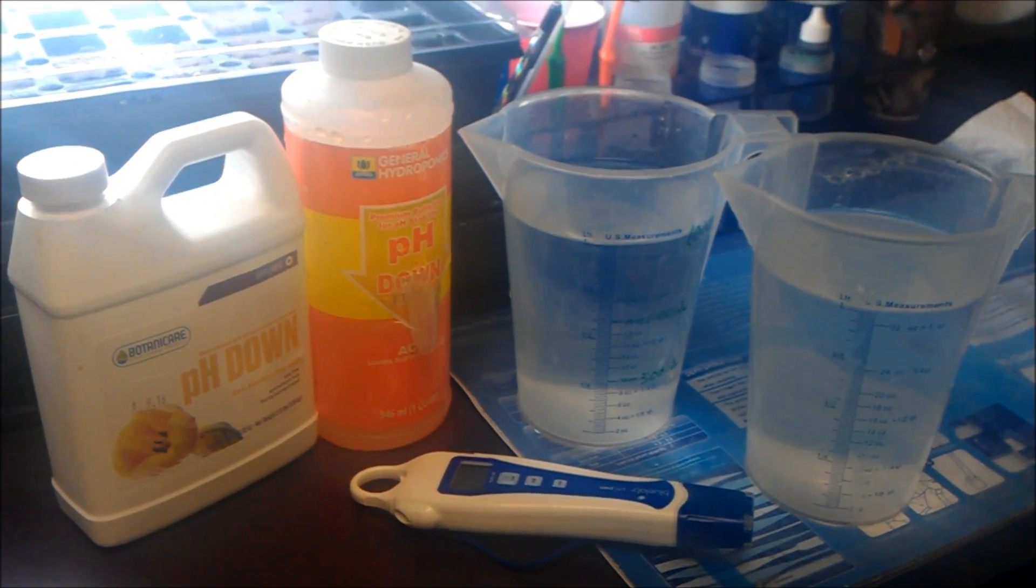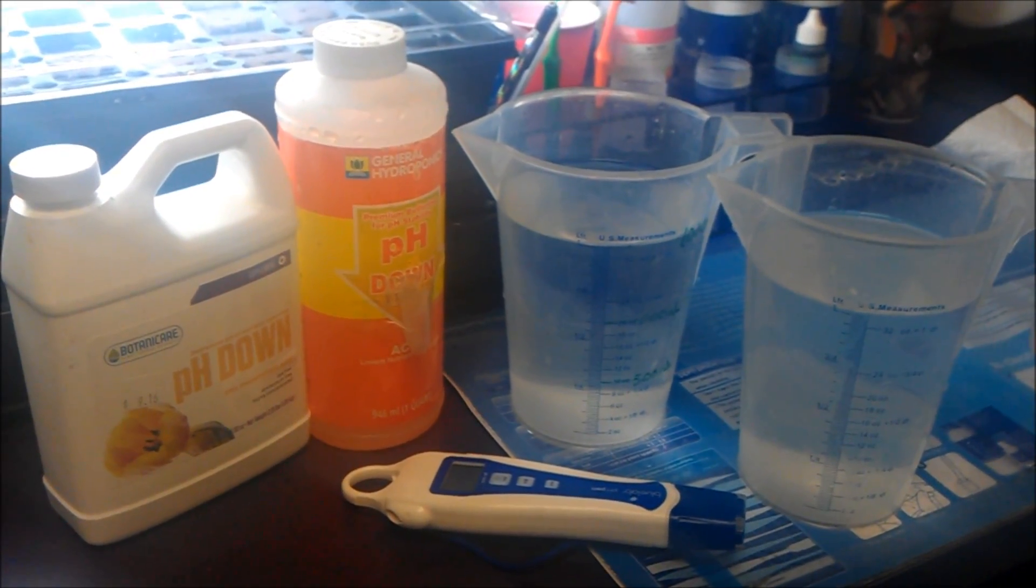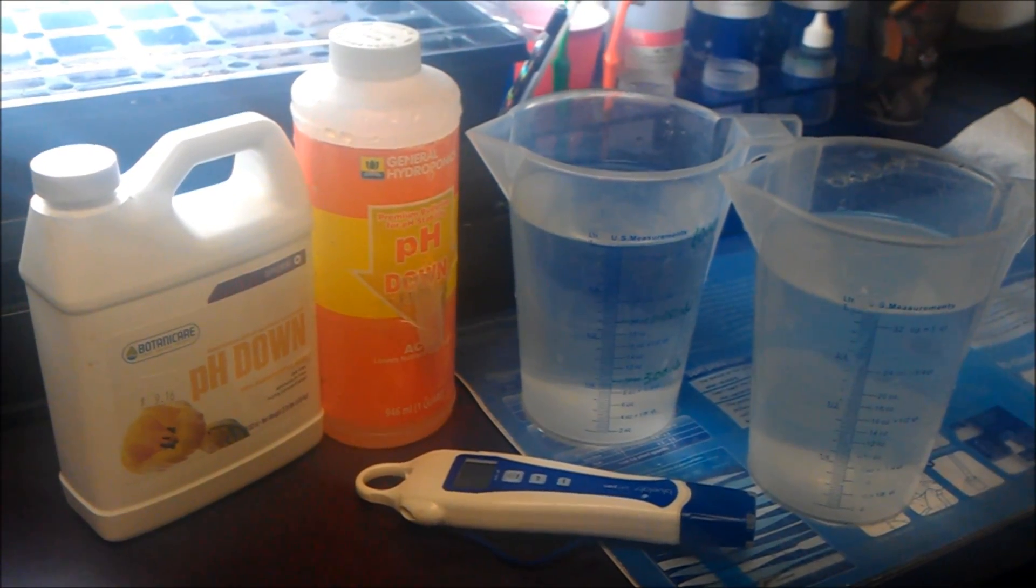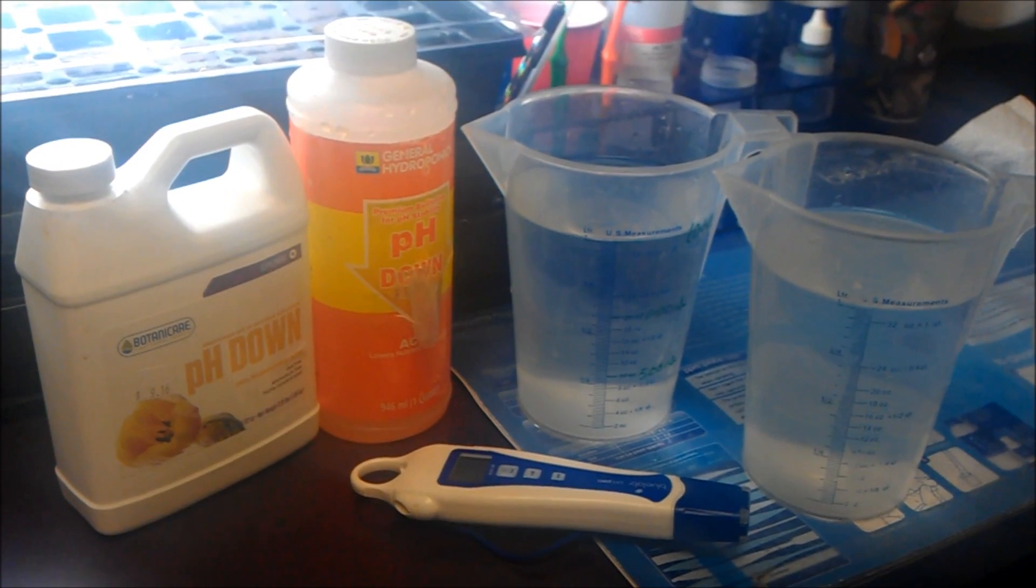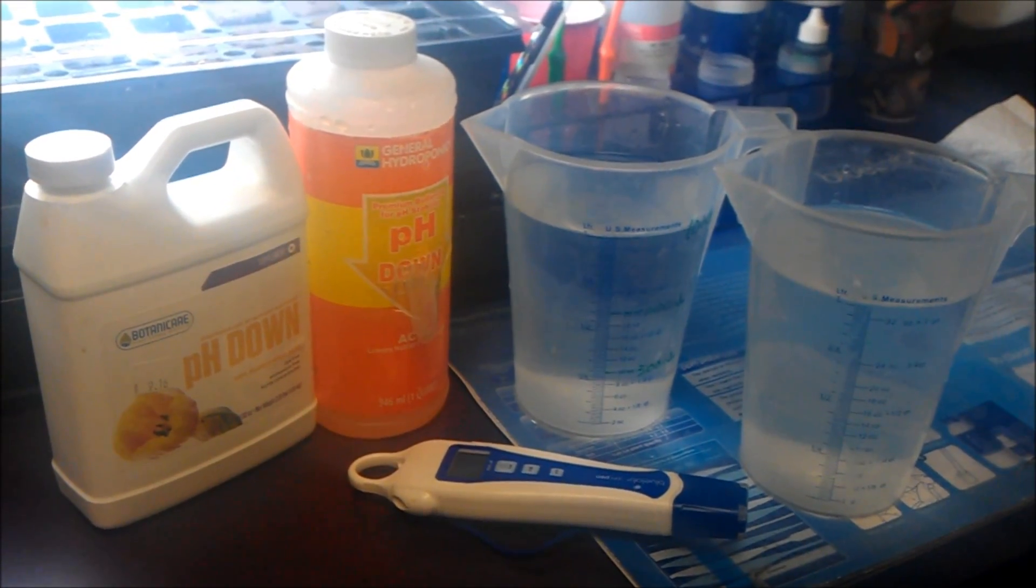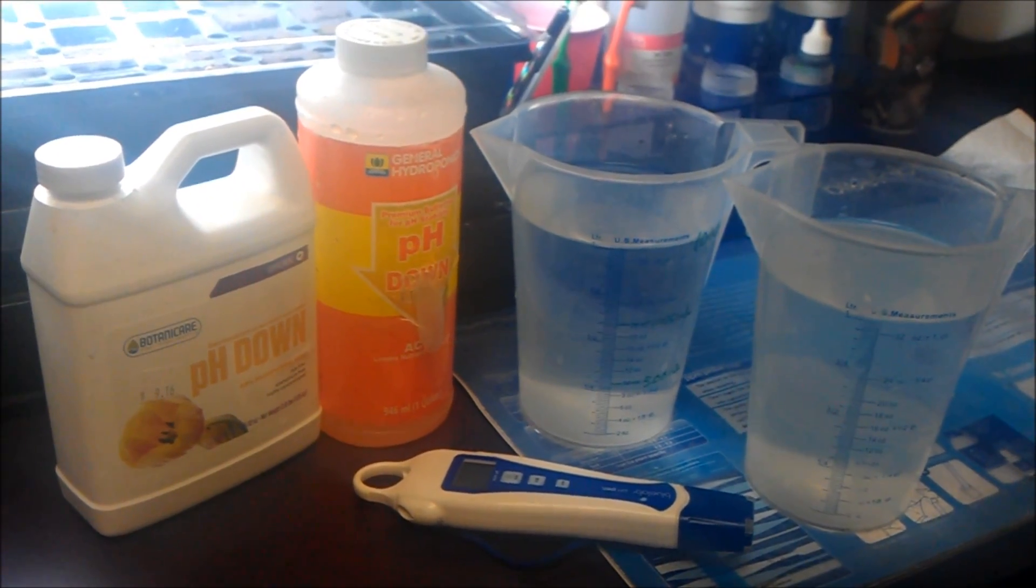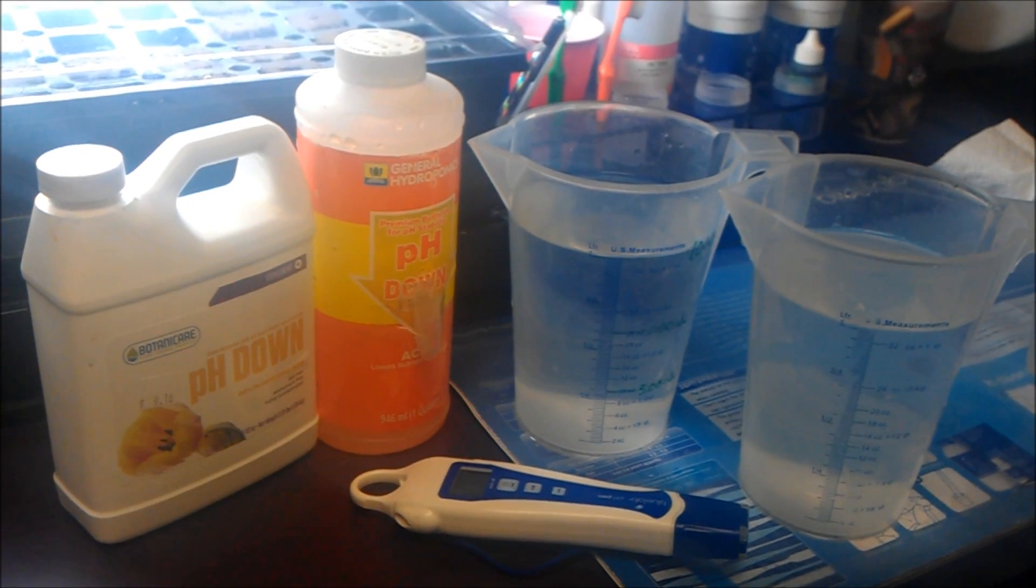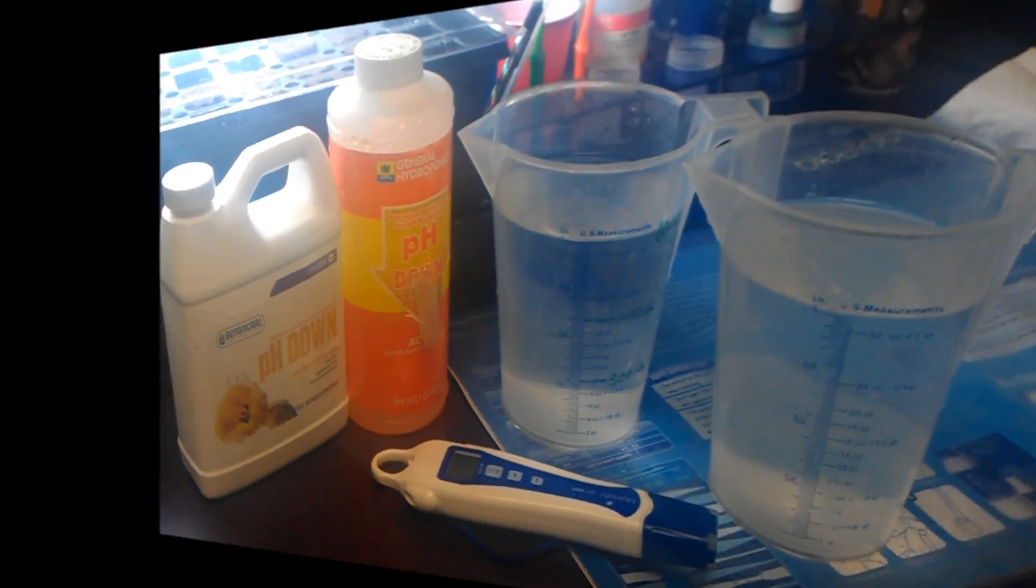Okay guys, what I'm going to do here is test whether Botanic Care pH down is as effective as General Hydroponics. There's been some talk that it requires more to get the same job done. I've got two 1000ml solutions of reverse osmosis water. I'll take the initial pH, add the same amount of pH down into each—General Hydroponics in one and Botanic Care in the other—take the readings, and we'll see what we get.